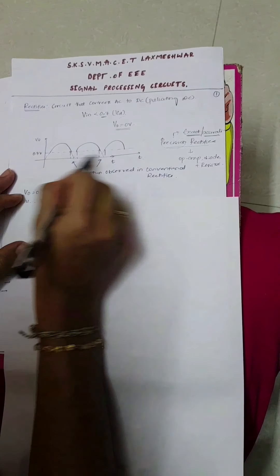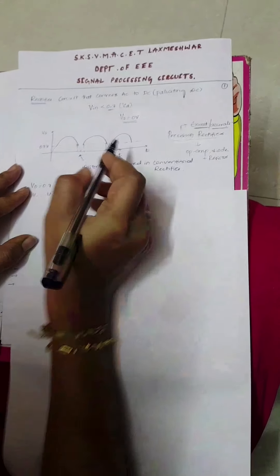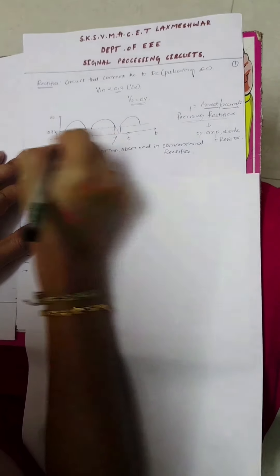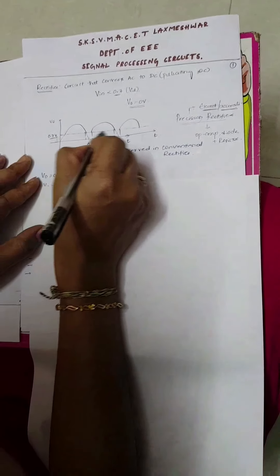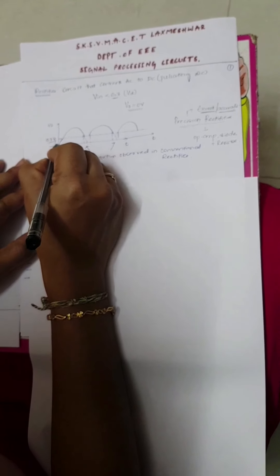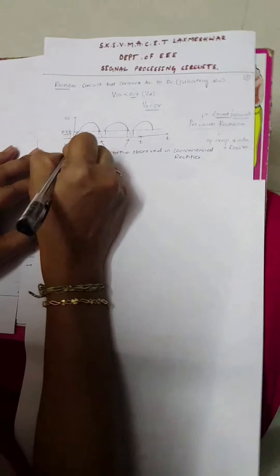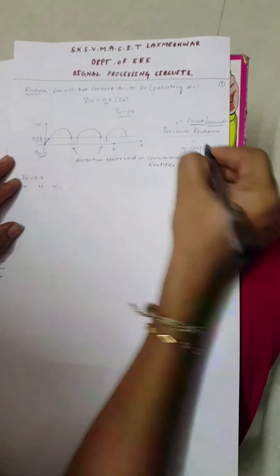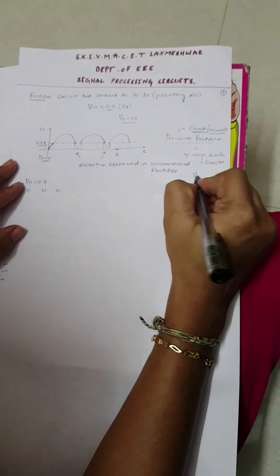Now there is a waveform here. This is the output waveform V naught — the output of the rectifier. A line is indicated here at 0.7 volts, which is the forward voltage drop of the diode. Below this line, in the case of conventional rectifiers, we used to get the output voltage V naught as 0. But in the case of precision rectifiers, even if the input is less than 0.7V, we can get the output voltage.